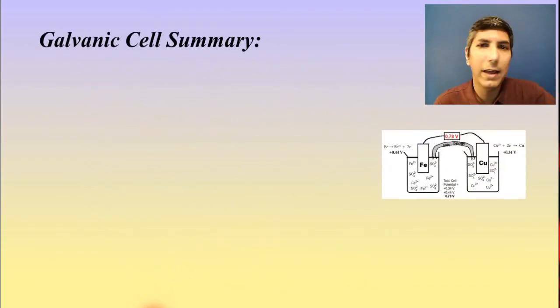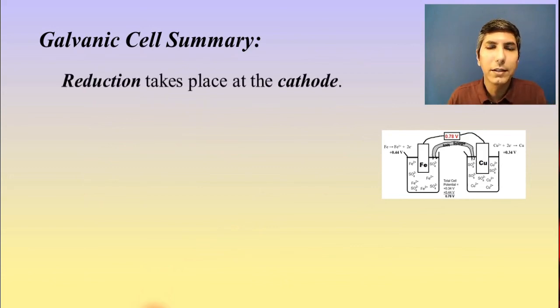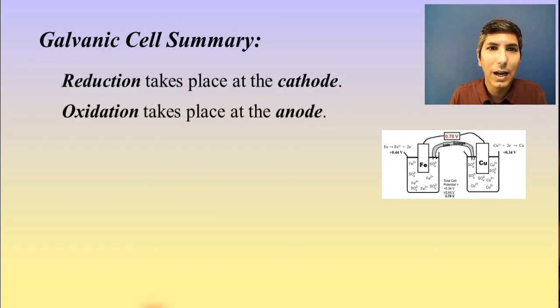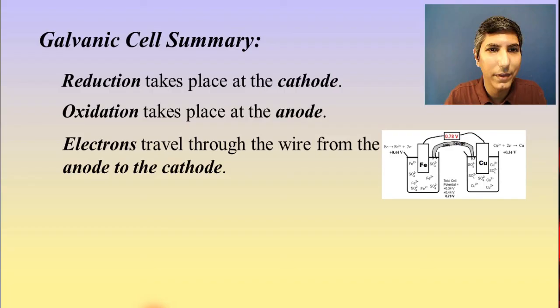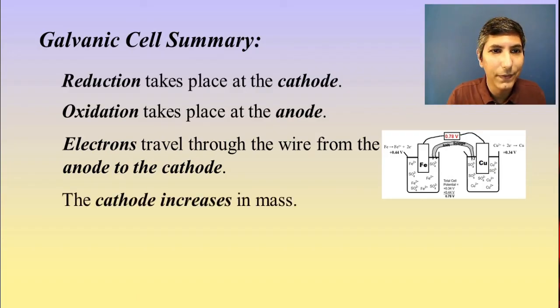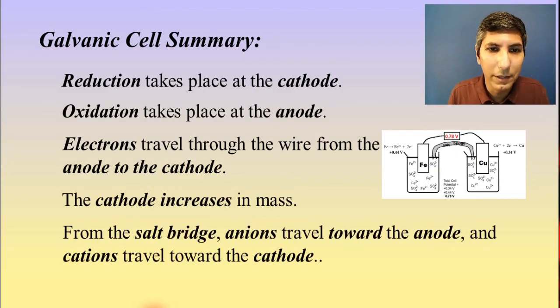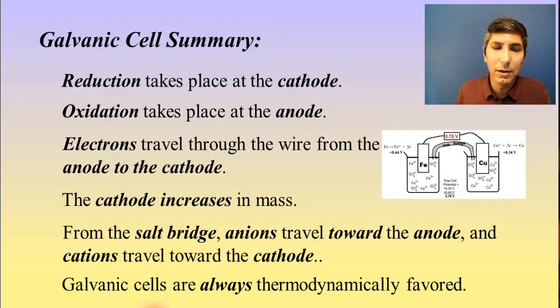So let's just summarize what we have about galvanic cells here before we move on to the next part of this. Reduction takes place at the cathode. Oxidation takes place at the anode. Or, if you want a nice mnemonic aid, red cat and an ox. Electrons travel through the wire from the anode to the cathode. Think about the AC. The cathode increases in mass. The cat gets fat. From the salt bridge, anions travel toward the anode, and cations travel toward the cathode.